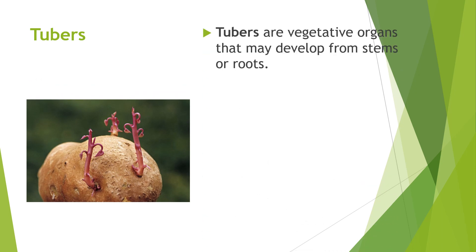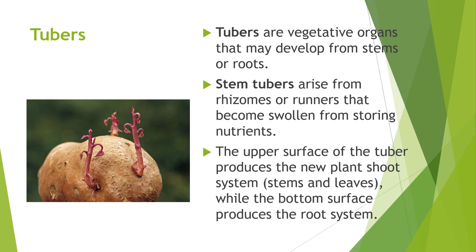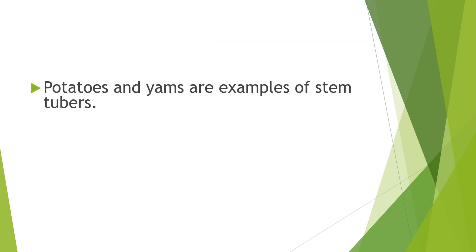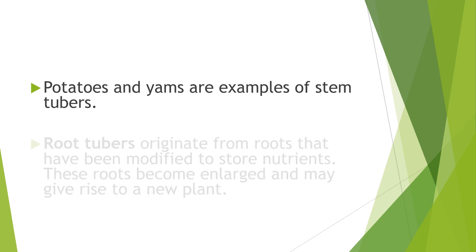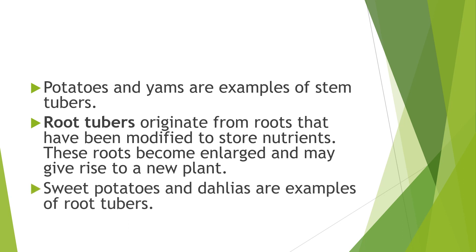Tubers are vegetative organs that may develop from stems or roots. Stem tubers arise from rhizomes or runners that become swollen from storing nutrients. The upper surface of the tuber produces the new plant shoot system — stems and leaves — while the bottom surface produces the root system. Potatoes and yams are examples of stem tubers. Root tubers originate from roots modified to store nutrients; these roots become enlarged and may give rise to a new plant. Sweet potatoes and dahlias are examples of root tubers.